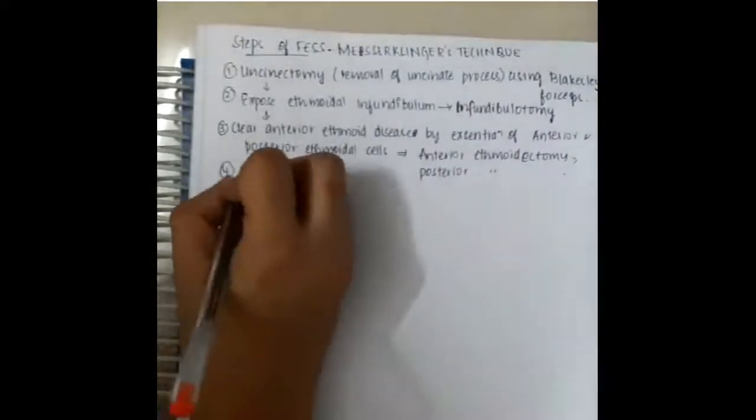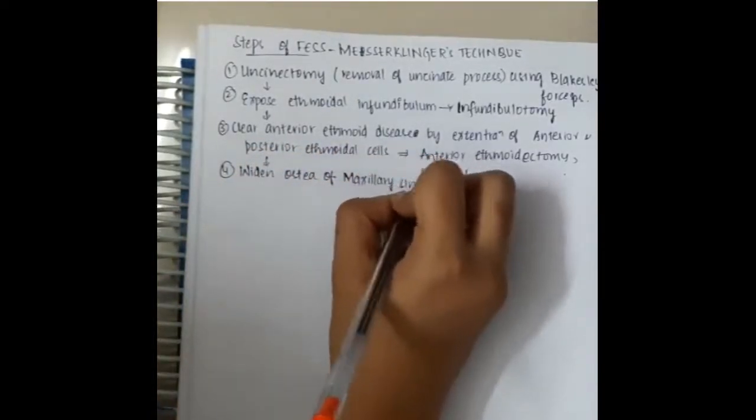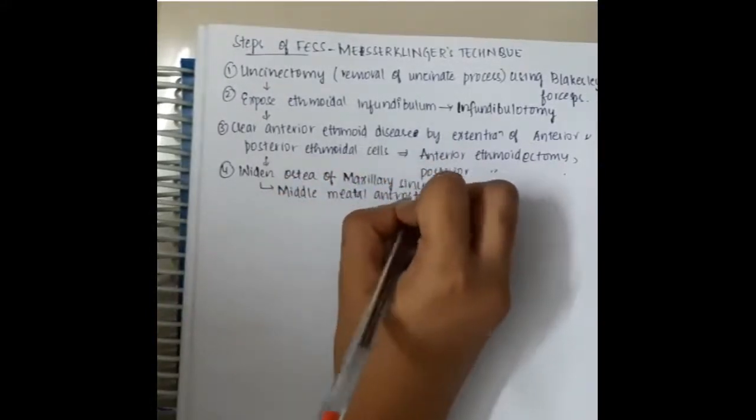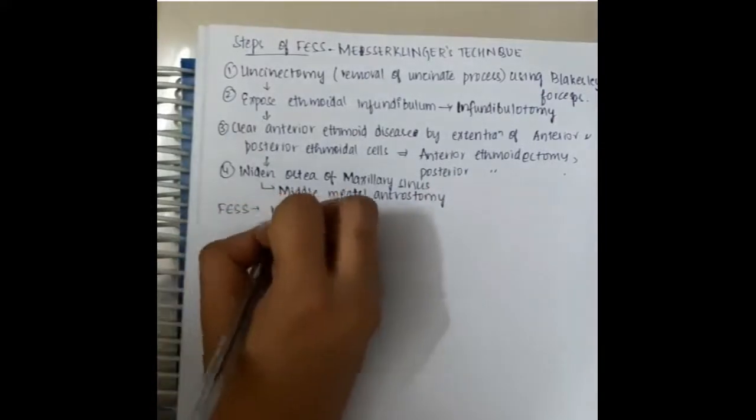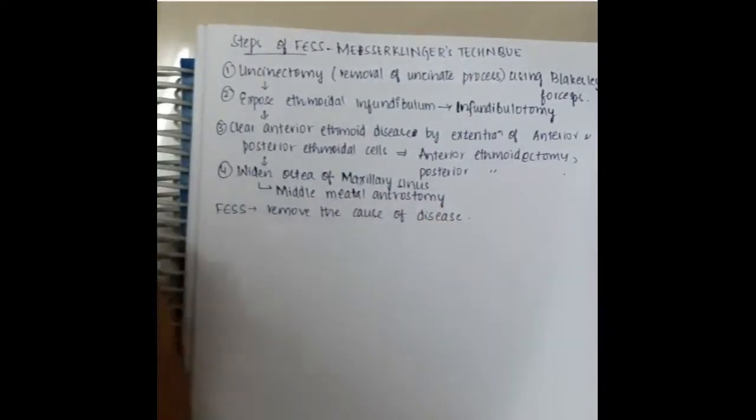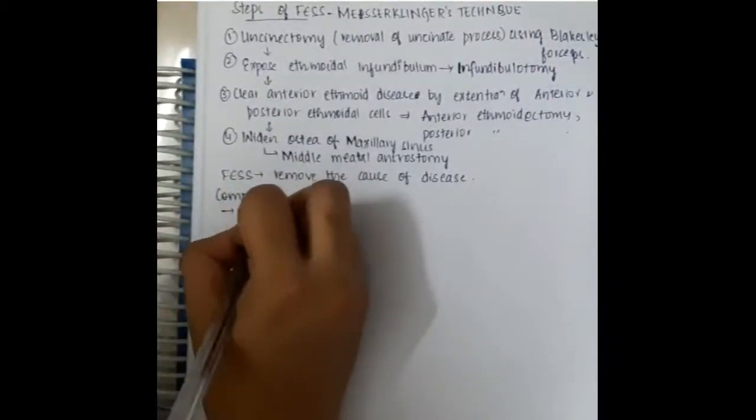We will widen the ostium of maxillary sinus. Once we widen the ostium of maxillary sinus, it will result in middle meatal antrostomy. You should remember these steps clearly: first, there is uncinectomy followed by infundibulotomy, then anterior ethmoidectomy and posterior ethmoidectomy, and finally middle meatal antrostomy.